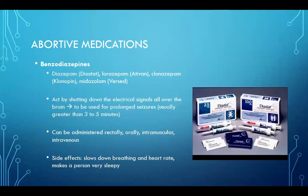In general, these medications act by shutting down electrical signals all over the brain. They are used for prolonged seizures, usually lasting greater than three to five minutes. They can be administered in many ways: rectally, orally, intramuscular, or intravenous. Because they shut down electrical activity all over the brain, common side effects include being extremely sleepy, slowing down breathing, and slowing down heart rate. Diastat is a commonly prescribed rectal medicine that can be used for children and adults with prolonged seizures.